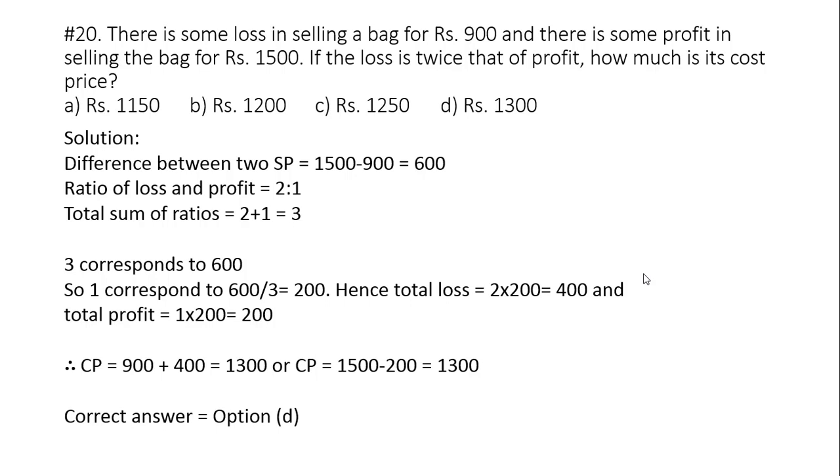Now CP can be calculated via two different ways. Either CP is equal to SP plus loss. So SP is 900 plus loss 400. Total answer is 1300 or CP is equal to SP minus profit. So 1500 minus 200, 1300. Either way, we get option number D as the right answer.